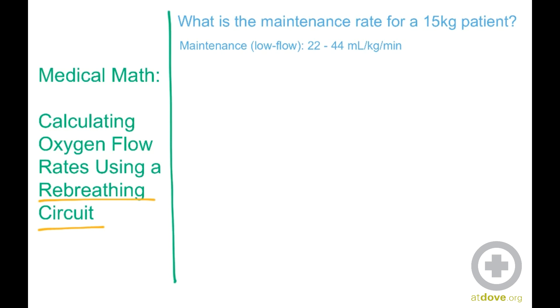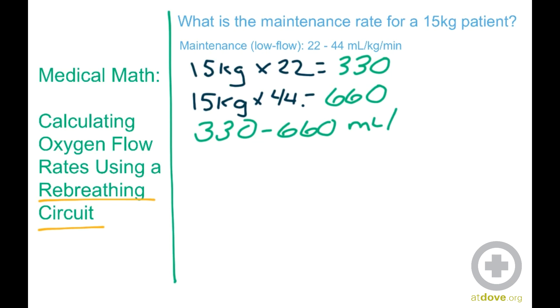And the formula we use for that is 22 to 44 mils per kg per minute. So using the same 15 kg patient, we're going to figure out the low range for maintenance flow rates. We have 15 kg times 22, and that equals 330. And the high range of that formula is 15 kg times 44, and that equals 660. So our result is 330 to 660 mils per minute.